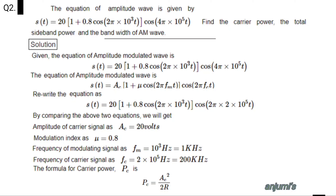This equation can be compared with the standard amplitude modulated wave: S(t) = AC(1 + μ cos(2π fm t)) cos(2π fc t). We rewrite 4π × 10⁵t as 2π × 2 × 10⁵t. By comparing the two equations, we get: amplitude of carrier signal AC = 20 volts, modulation index μ = 0.8, frequency of modulating signal fm = 10³ Hz = 1 kHz, and frequency of carrier signal fc = 2 × 10⁵ Hz = 200 kHz.